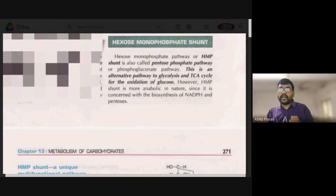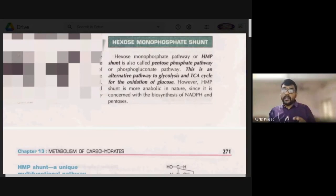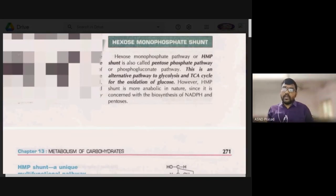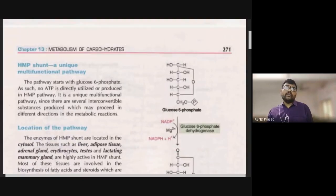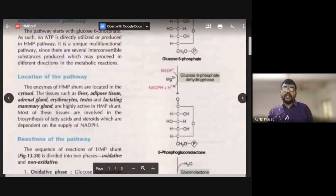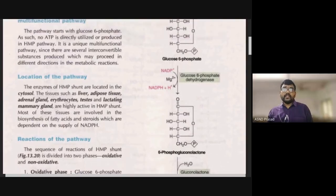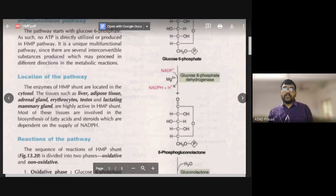Fat synthesis and cholesterol synthesis happen here. The locations where this pathway is active include adipose tissue, liver, kidneys, adrenal glands, and erythrocytes. This is a unique multifunctional pathway where a number of metabolic products are formed.